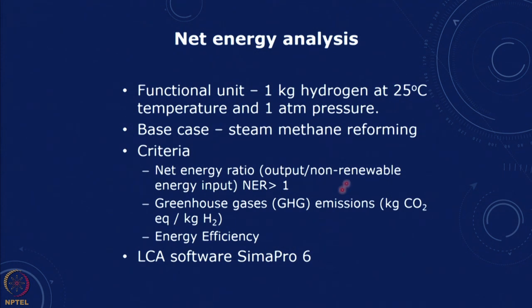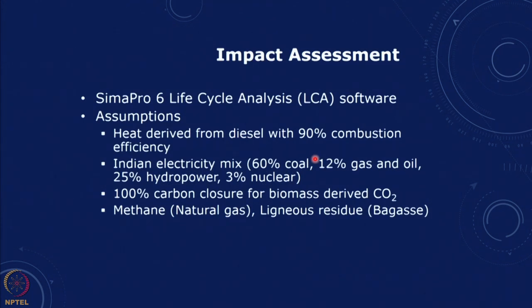The functional unit defined is 1 kg of hydrogen to be produced at 25 degrees centigrade temperature and 1 atmosphere pressure. We compare this with a base case of steam methane reforming with natural gas, and we would like to calculate: one, what is the net energy ratio — output by the non-renewable energy input, the NER should be greater than 1 — and also what is the kg of CO2 equivalent per kg of hydrogen and the energy efficiency. We have used the LCI software SimaPro, but we can also do this using our own calculations. For the heat used in processing, we need to produce steam using diesel with 90 percent combustion efficiency.